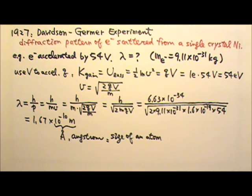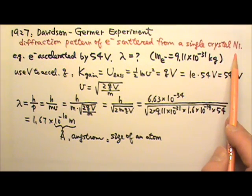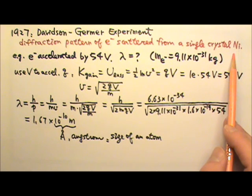Remember that we need slit distance similar to the wavelength to produce significant diffraction pattern. With this wavelength, we can use atoms as slits. In a nickel single crystal, the atoms are arranged in the same repeating manner.